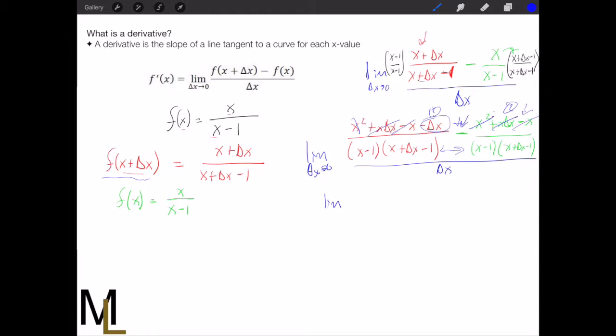And so what we're left with now is we have just the negative delta x on top. So if I rewrite this, so now everything's been combined: negative delta x all over x minus one times x plus delta x minus one. And again, all of this is divided by delta x.